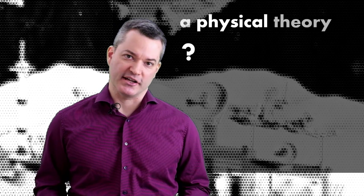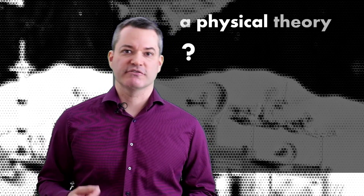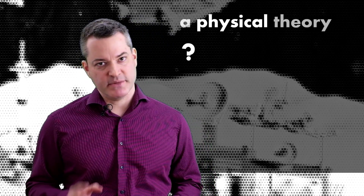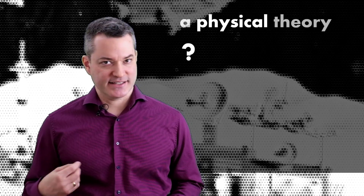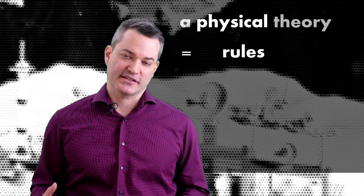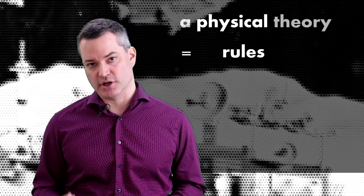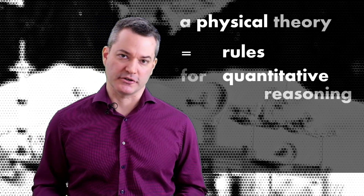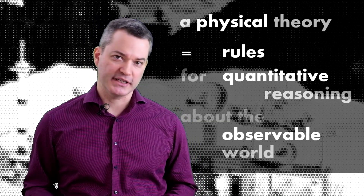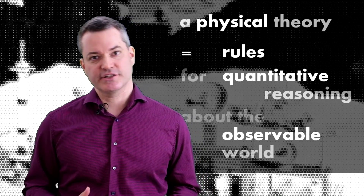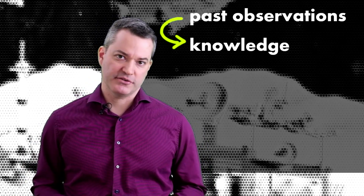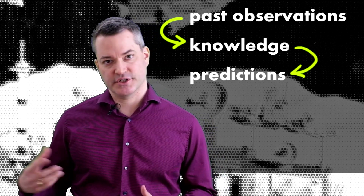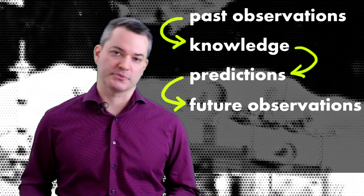Believe it or not, many people are deeply confused about quantum mechanics because they miss this crucial point. In general, a physical theory is a set of rules that tells us how to make true quantitative statements about the world. More concretely, based on quantitative knowledge from past physical observations, a physical theory allows us to predict the results we expect from future observations.